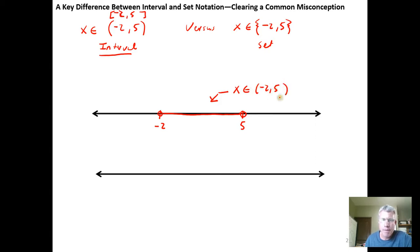When we look at x as an element of the set that contains negative 2 and 5, what this is telling us is that x is one of the elements in this set. So if there's a negative 2 on the number line and there's a 5 on the number line, either x is negative 2, so we would just draw a solid point right there, and that's one possible answer, or x is a 5, and those are the only two things that x can be.